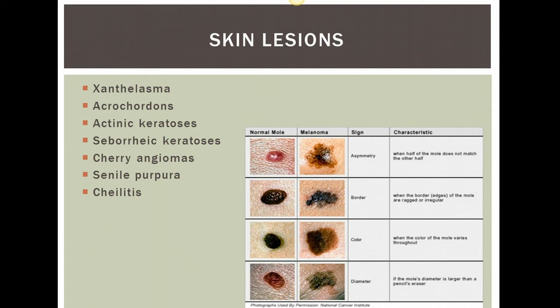With prolonged exposure to sun in the geriatric patient, there are many different skin lesions to be aware of as you're interacting with them. The first one is xanthelasma, which is a fatty deposit on the eyelid. Acrochordons are skin tags that are flesh colored. Actinic keratosis is a normal aging growth that is precancerous, and they can look like colored plaques.